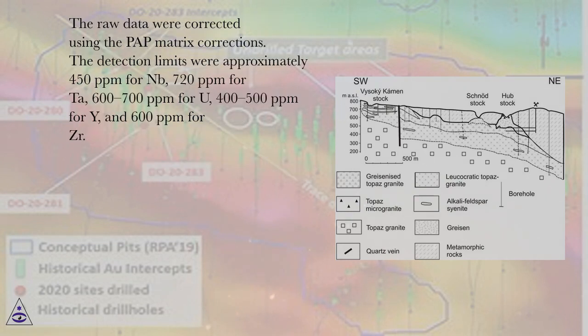The raw data were corrected using the PAP matrix corrections. The detection limits were approximately 450 ppm for Nb, 720 ppm for Ta, 600 to 700 ppm for U, 400 to 500 ppm for Y, and 600 ppm for Zr.